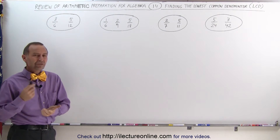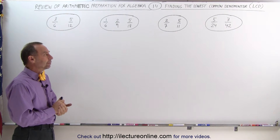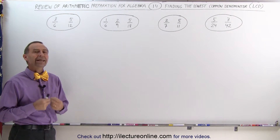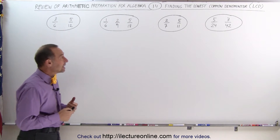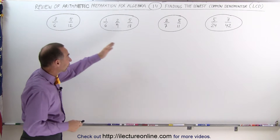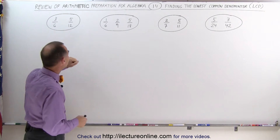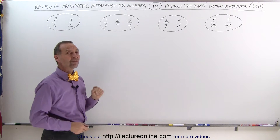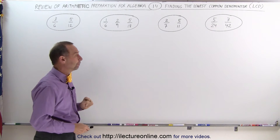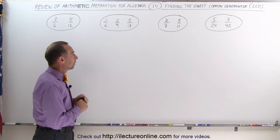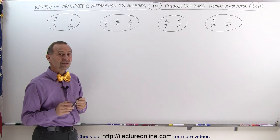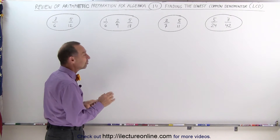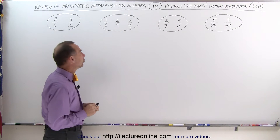There are different techniques to find the lowest common denominator — there are actually three main techniques. Notice here we have four sets of fractions. Three of the sets have two fractions in them, and one set has three fractions in it. The first technique is to look at the largest of all the denominators to see if the others fit evenly into it.